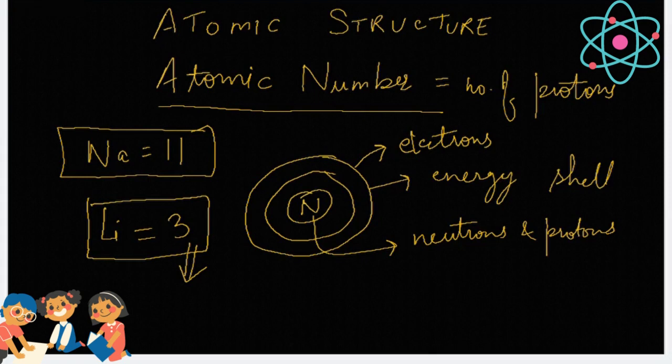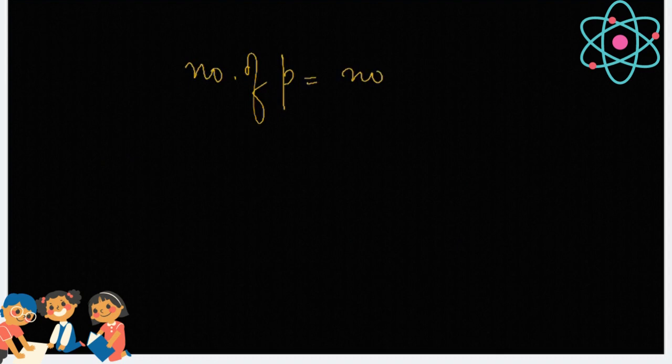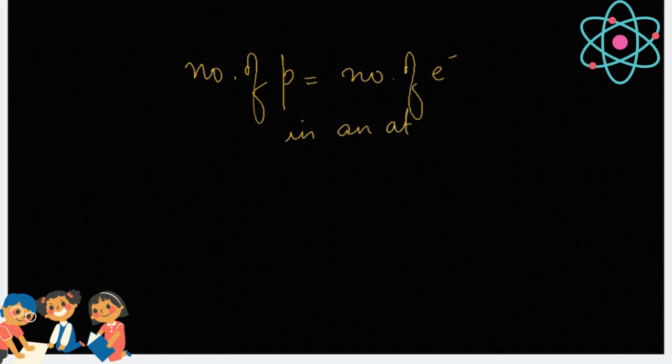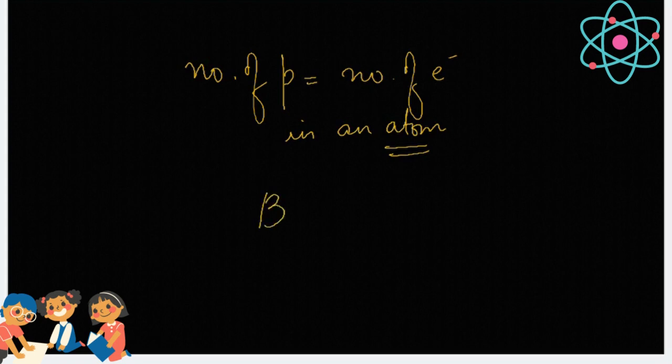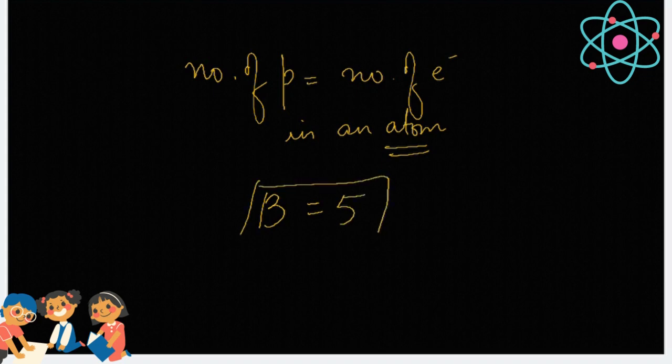Another main thing to be clear with is that the number of protons is equal to the number of electrons present in an atom. We are not talking about an ion. For an atom, the number of protons equals the number of electrons. So, again, if I say boron has atomic number 5, the number of protons and number of electrons will also be 5.